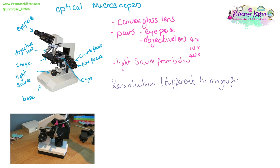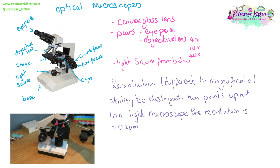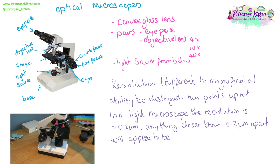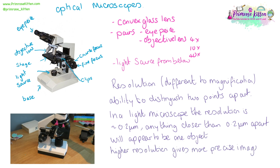An important thing to note about optical microscopes is that resolution is different to magnification. Resolution is the ability to differentiate between two spots — to work out that those two things are there instead of one. In a light microscope the resolution is roughly 0.2 micrometres. Anything closer than 0.2 micrometres apart will appear to be a single object, and the higher the resolution a microscope has, the more precise the image.